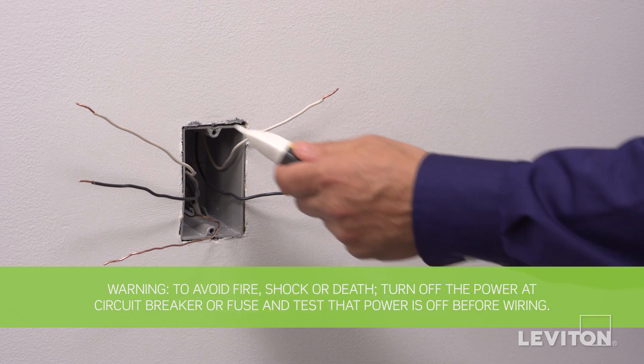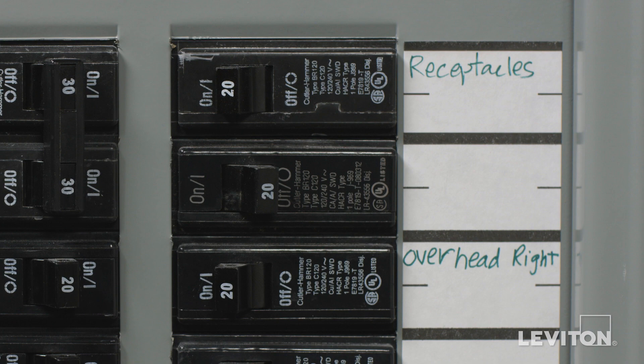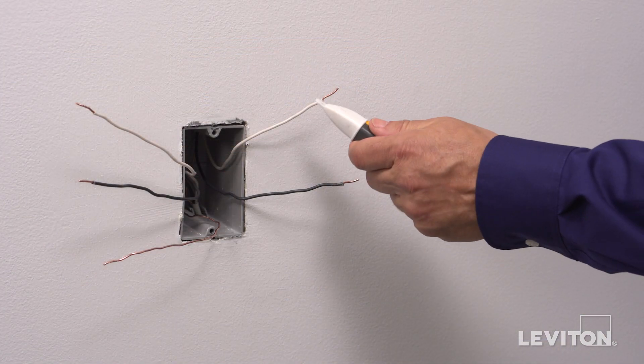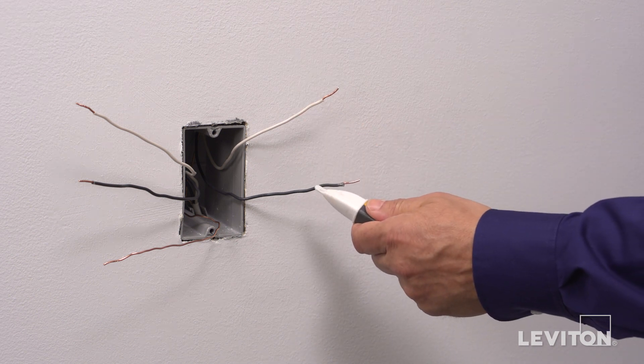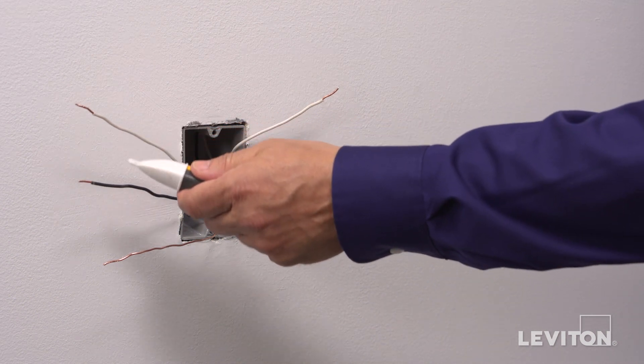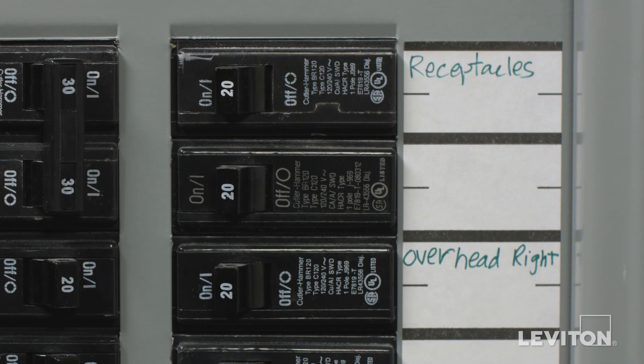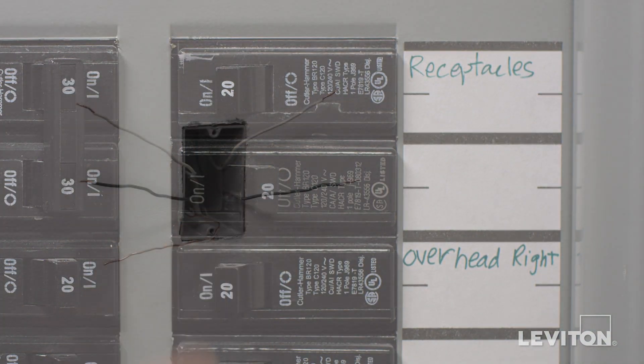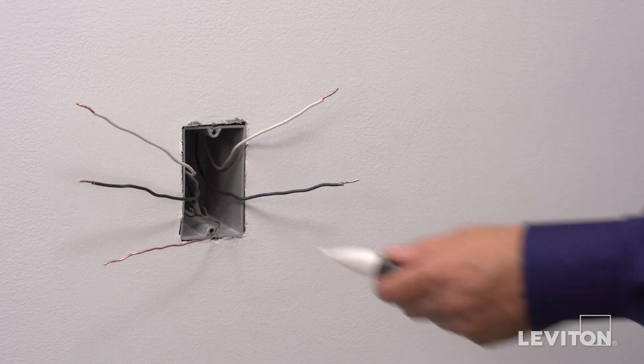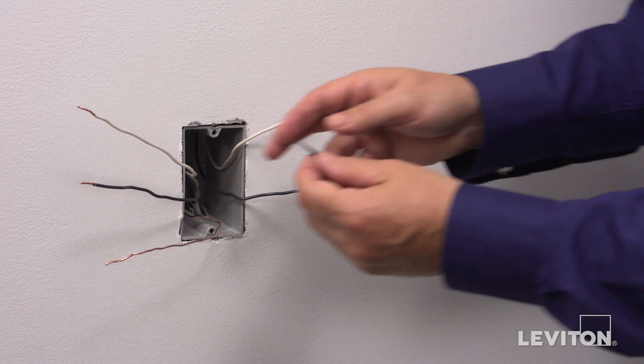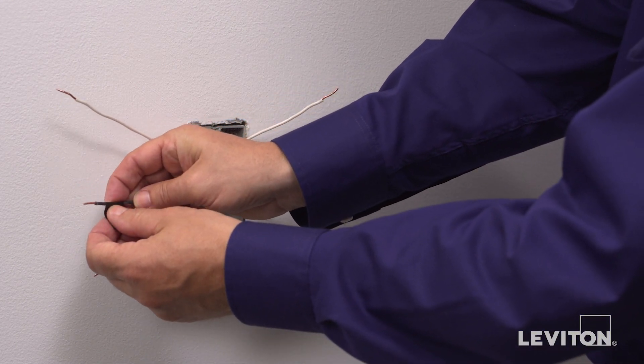Now, we need to identify the hot wire. To do this, turn the circuit breaker back on. Carefully use the voltage tester to test each wire. The hot wire will be indicated by the tester. Once identified, turn off the circuit breaker to shut power and test to ensure that the power is off. Use a small piece of electrical tape to label the hot wire.